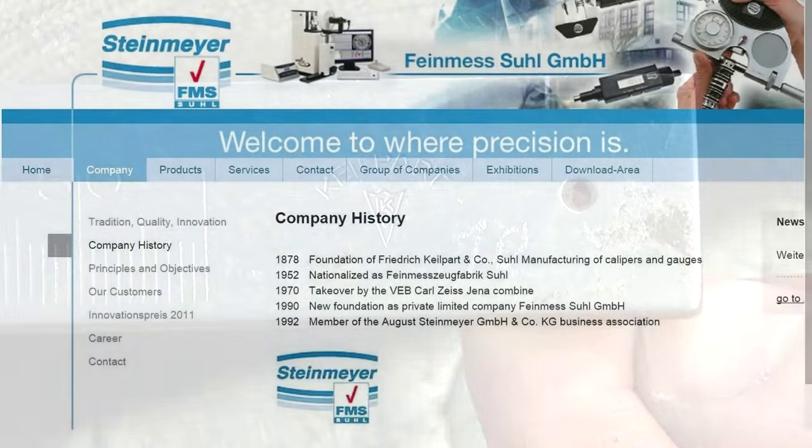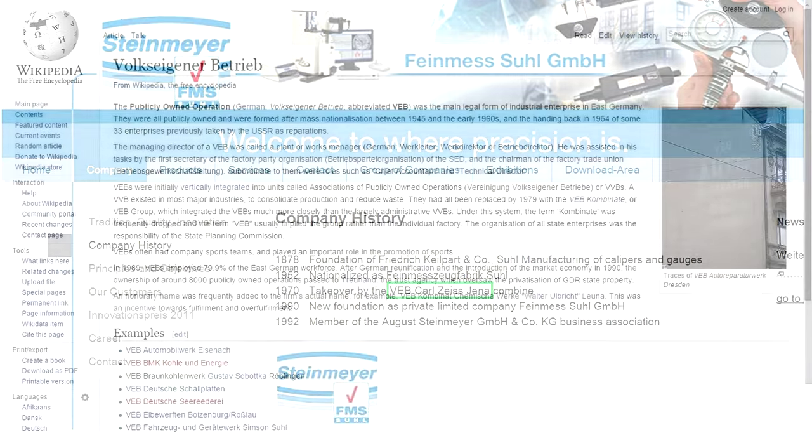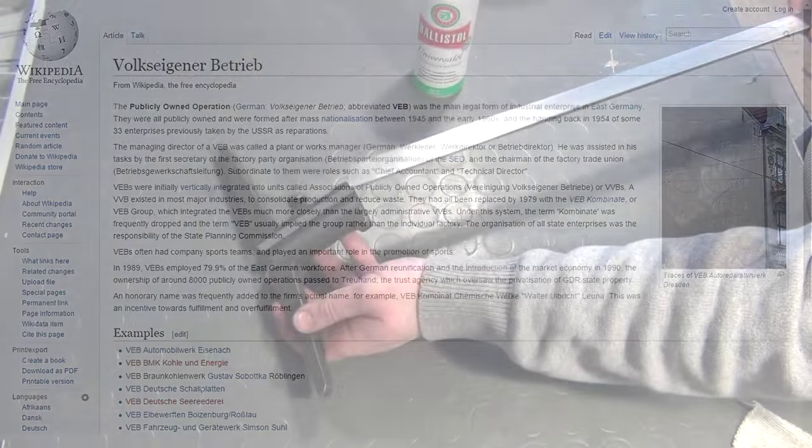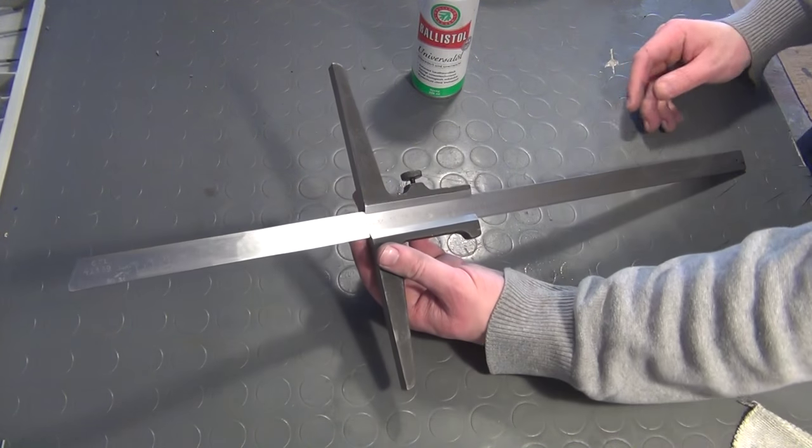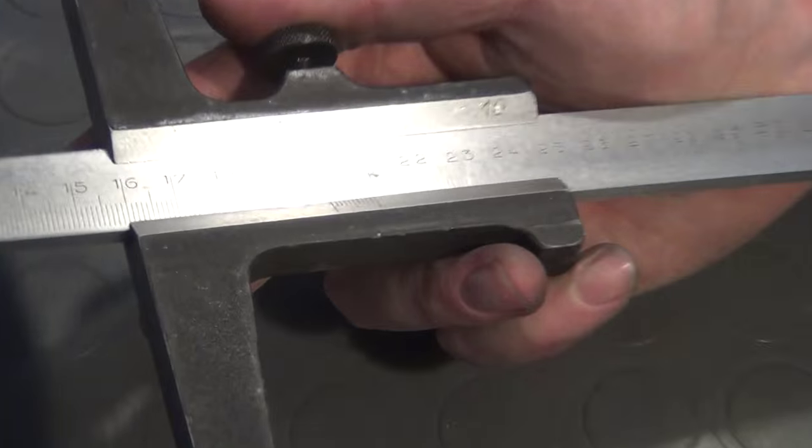It is also interesting to see that the company became part of VEB Carl Zeiss Jena, which of course operated in the optics industry. And here is another thing that you should know if you want to buy older German equipment. Whenever you read VEB, you know it was made in East Germany. VEB means Volks eigener Betrieb, which could be translated to the people's own company. It would be unfair to say that East German products were of low quality in general, but it is true that the East German industry had to work with a scarcity of resources, which often led to inferior quality, at least when it came to the consumer market. Higher quality products were largely reserved for military use.